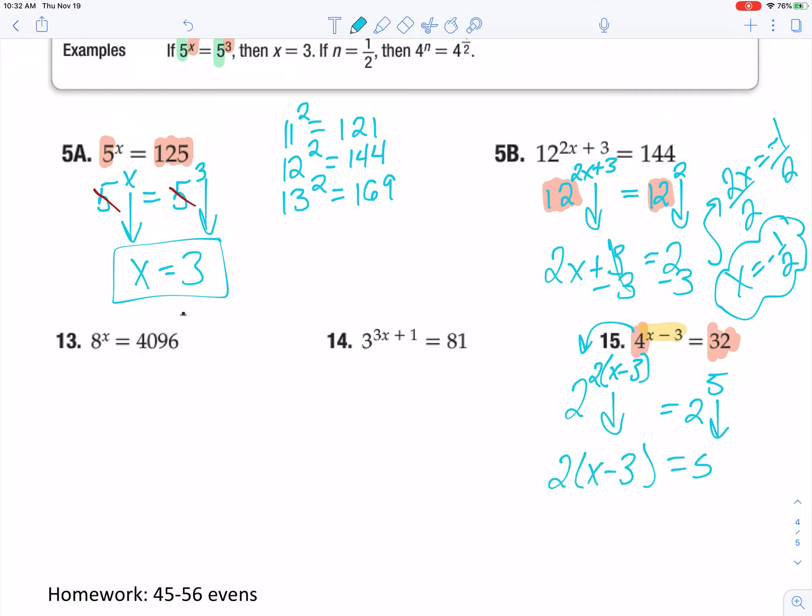Now that my bases are the same, I can just drop down the exponents. 2 parentheses x minus 3 equals 5. And now I have a three-step equation. Check this out. Distribute.